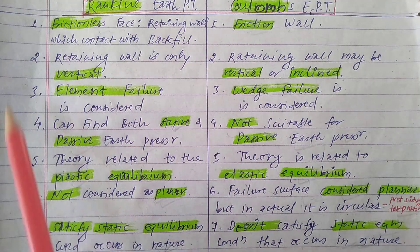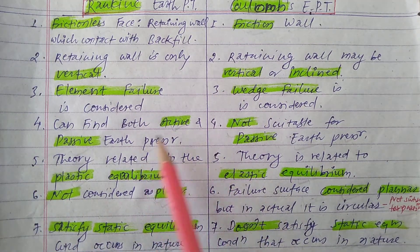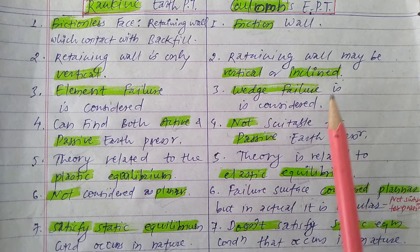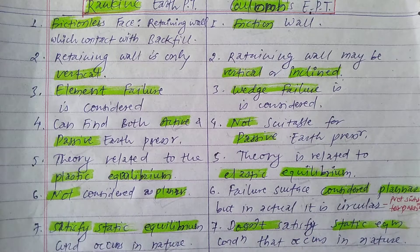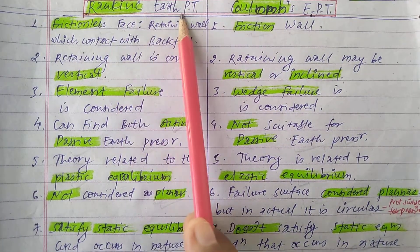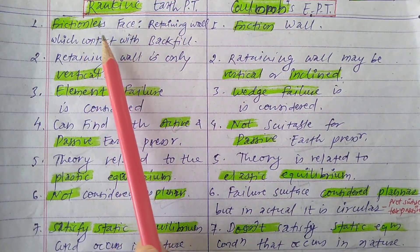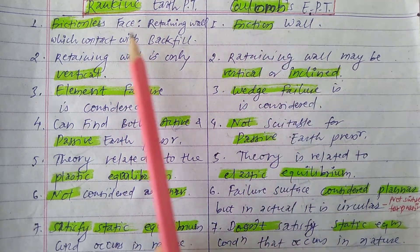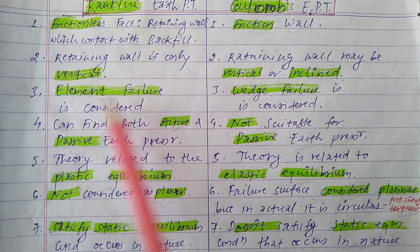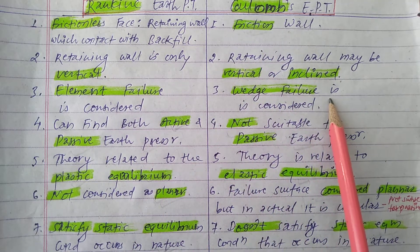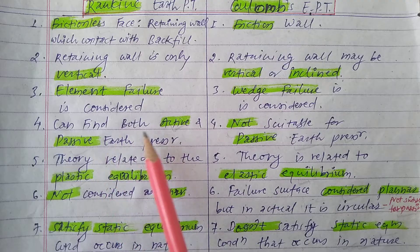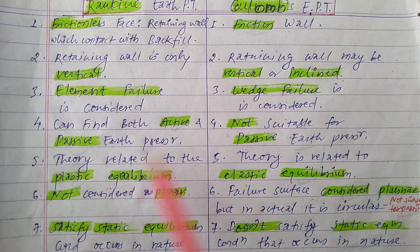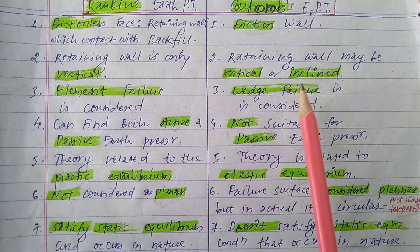So let's summarize: in Rankine's earth pressure theory we take a frictionless wall; in Coulomb's, a friction wall. In Rankine, element failure is considered; in Coulomb, wedge failure. In Rankine, both active and passive earth pressure can be found; in Coulomb, only active earth pressure can be found, not passive.